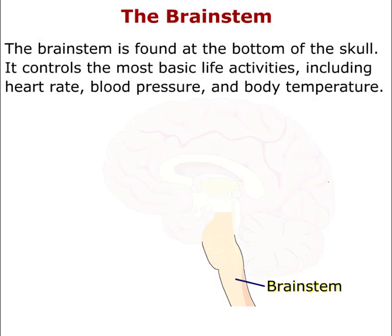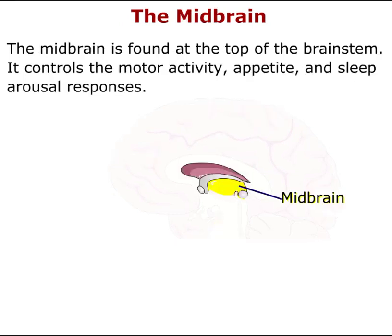The brain stem is found at the bottom of the skull. It controls the most basic life activities, including heart rate, blood pressure, and body temperature. The midbrain is found at the top of the brain stem. It controls motor activity, appetite, and sleep arousal responses.